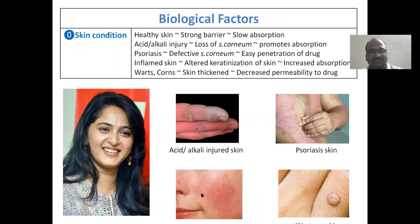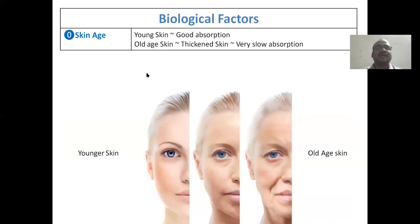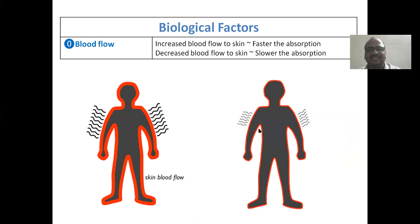Inflamed skin shows altered keratinization and increased absorption. Skin that becomes very thick shows decreased permeability to the drug. Regarding skin age: old-age skin is wrinkled and very thick, so permeation is very slow. Younger skin allows better permeation. Blood flow: higher blood flow to the skin means faster absorption; decreased blood supply means slower absorption from the patch. Regional skin sites also matter — palm and foot have very thick skin and slow absorption; the scrotal region has low-density skin and faster absorption.